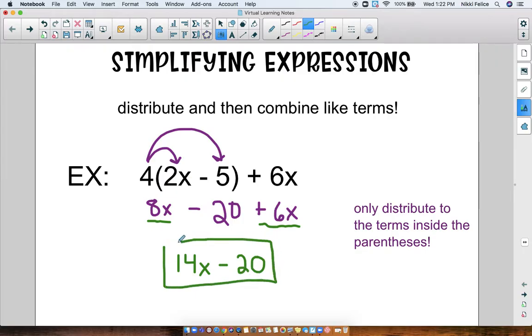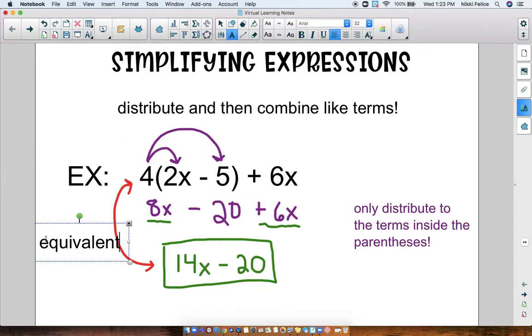14x minus 20. So that means that this expression, 4x minus 20, and this expression, the one we started with, those two things are equivalent with one another. Let's write that down. Those two things are equivalent. That is super, super important.